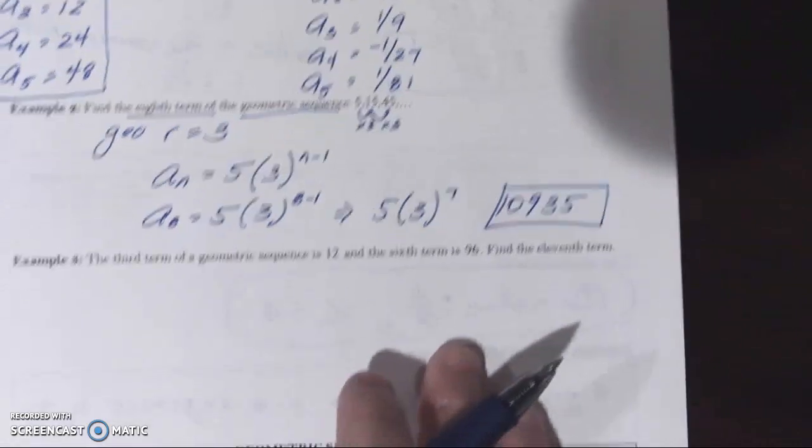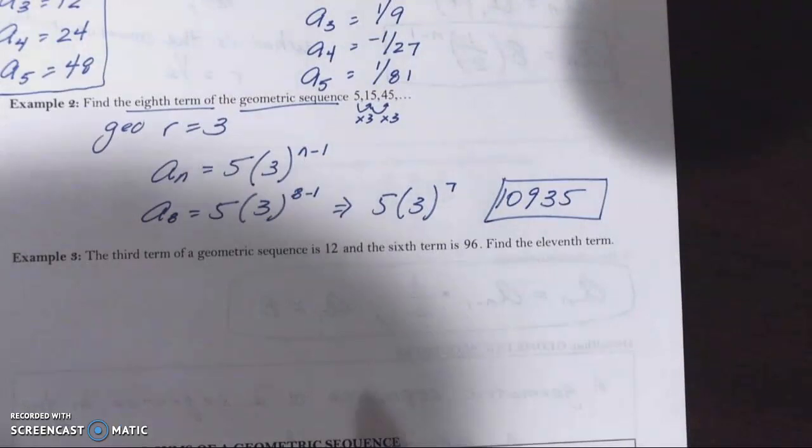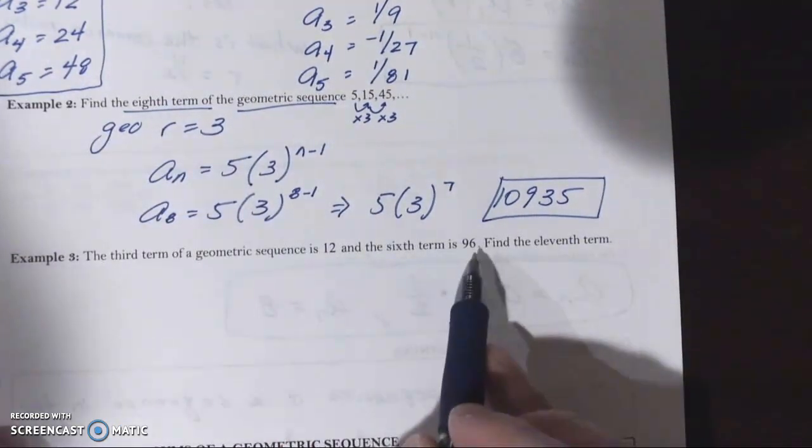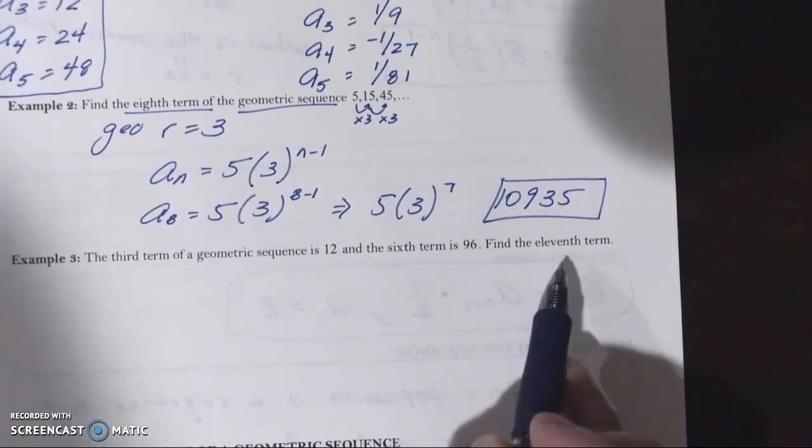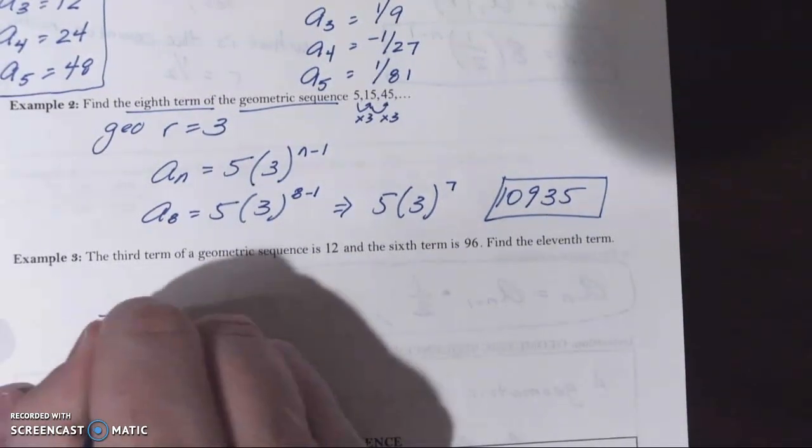Now, remember, if I go kind of quickly here, you can always rewind. That's the best part of learning through videos. The third term of a geometric sequence is 12. The sixth term is 96. Find the 11th term.